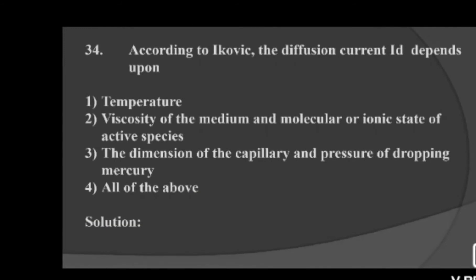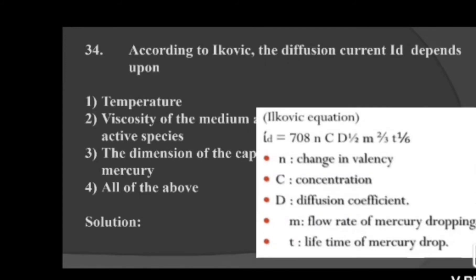Next question: according to the Ilkovic equation, the diffusion current Id depends upon — option 1: temperature, option 2: viscosity of medium and molecular or ionic state of active species, option 3: the dimension of capillary and pressure of dropping mercury, option 4: all of the above. Since the diffusion current is proportional to all the above factors, option 4 is the correct answer.